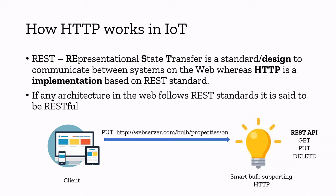Now I have a client and a smart bulb supporting HTTP protocol providing a REST API. I'm going to make a PUT request. The web server inside the smart bulb is accessible over http://webserver.com/bulb/property/on. I'm going to make a PUT request to this HTTP endpoint, and the bulb will turn on. The server will respond with a status code 200 OK — this is the acknowledgement the server makes to the client, saying I received your request, I have turned on. So that's how this HTTP works in Internet of Things.